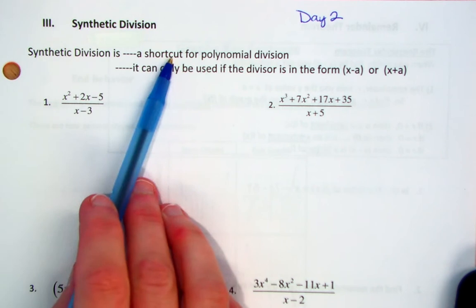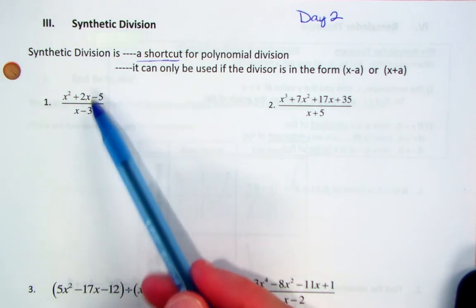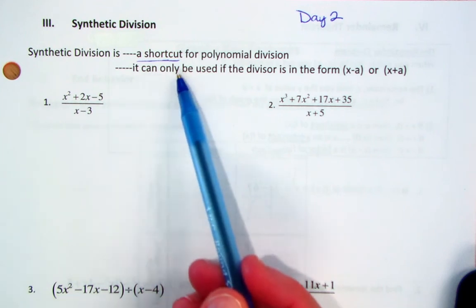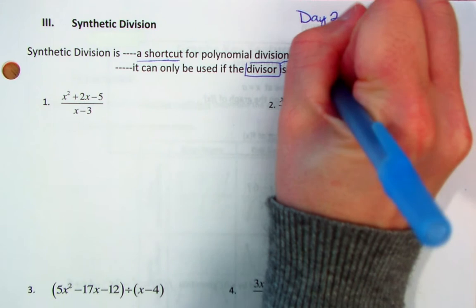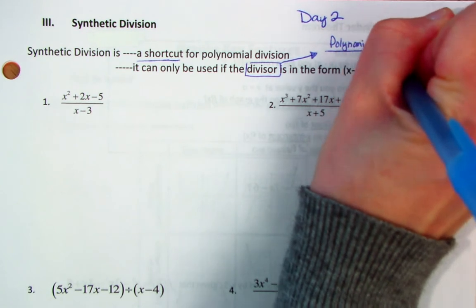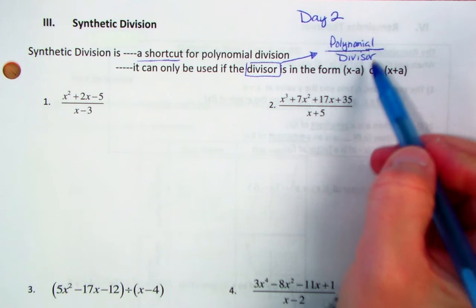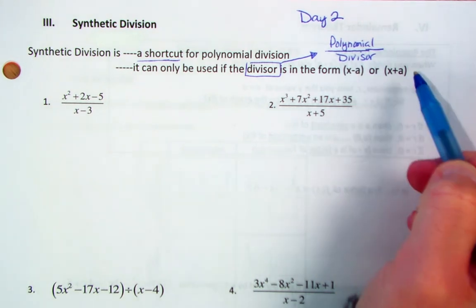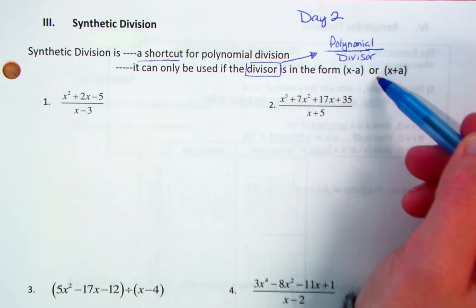Synthetic division is a shortcut for polynomial division, which means dividing a polynomial by another polynomial. It can only be used if the divisor — what you're dividing by, the denominator — is in the form x plus some number or x minus some number. We can't use it if we had a 2x plus or minus some number.